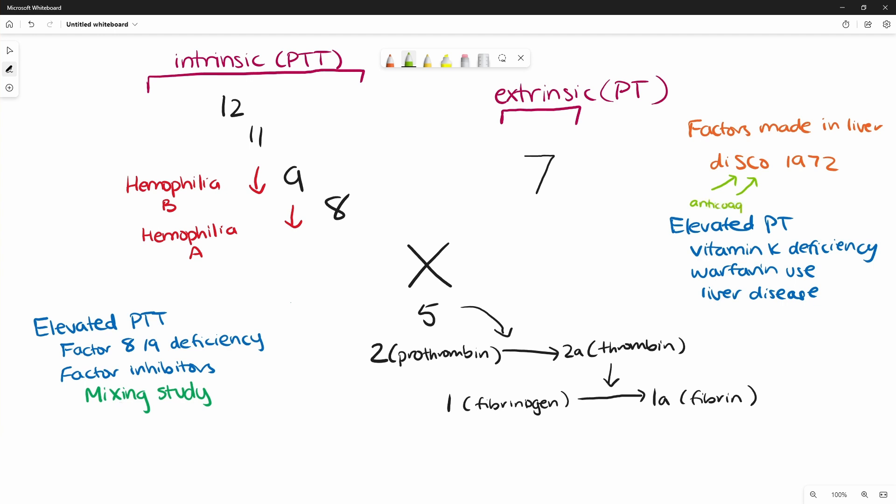So if a patient has deficiencies in protein C and S, then they are actually going to be prothrombotic, and they're going to be more likely to form clots. And then this is going to be factors 10, nine, seven, and two.